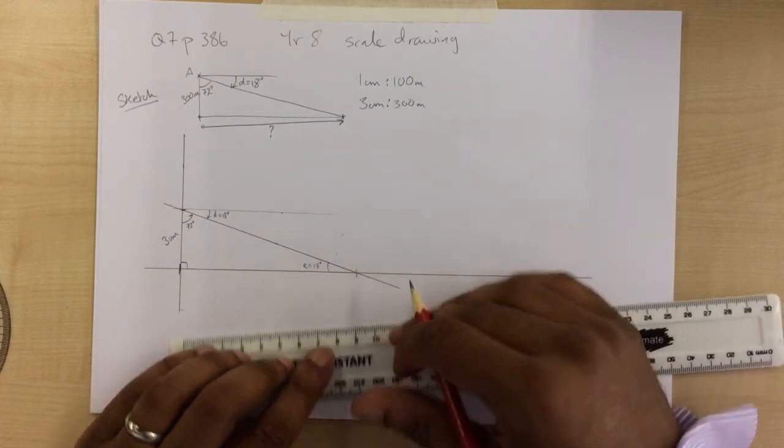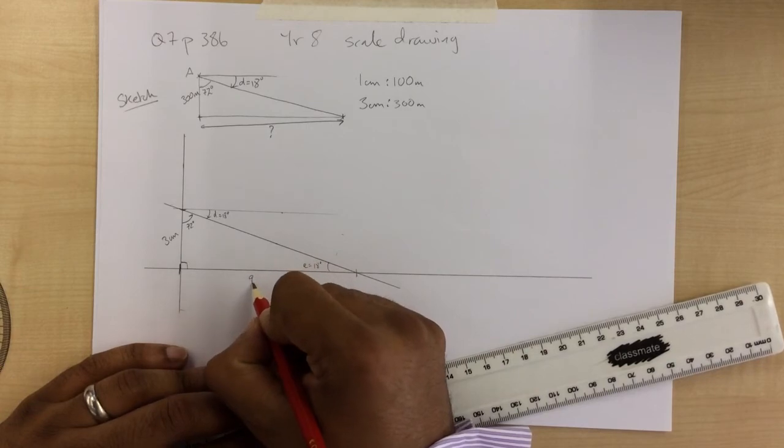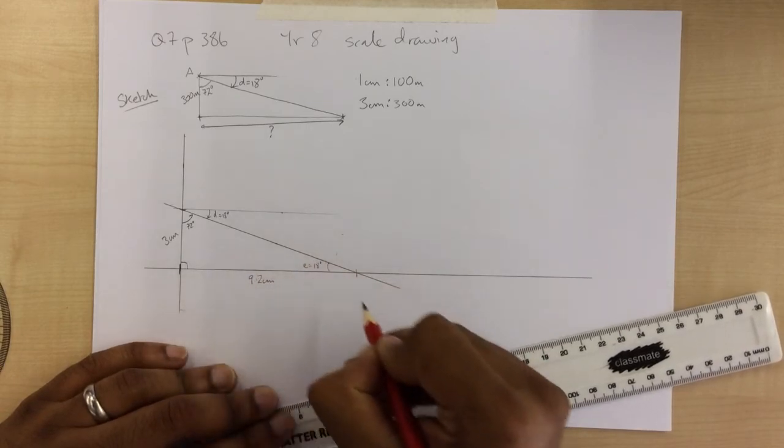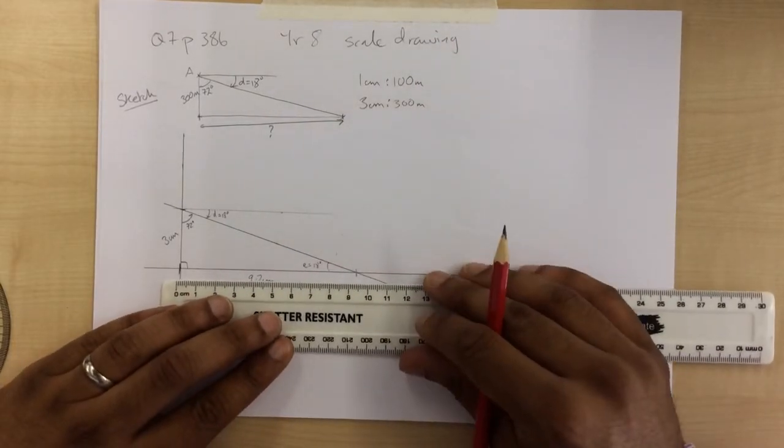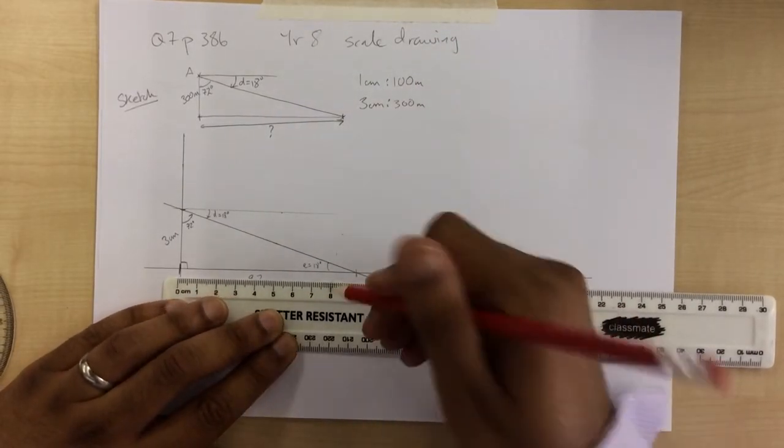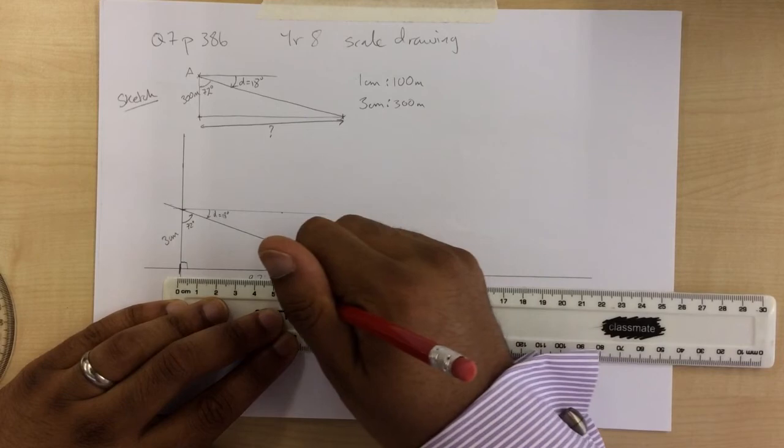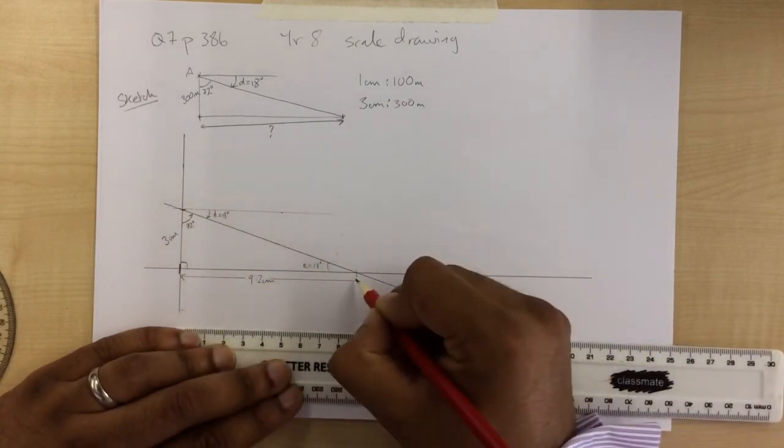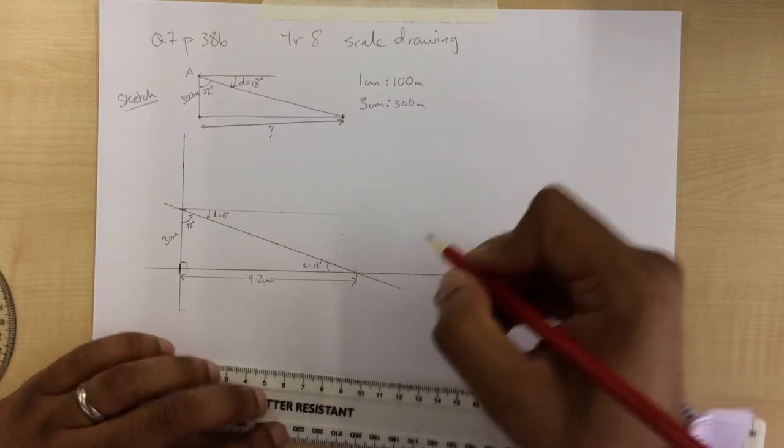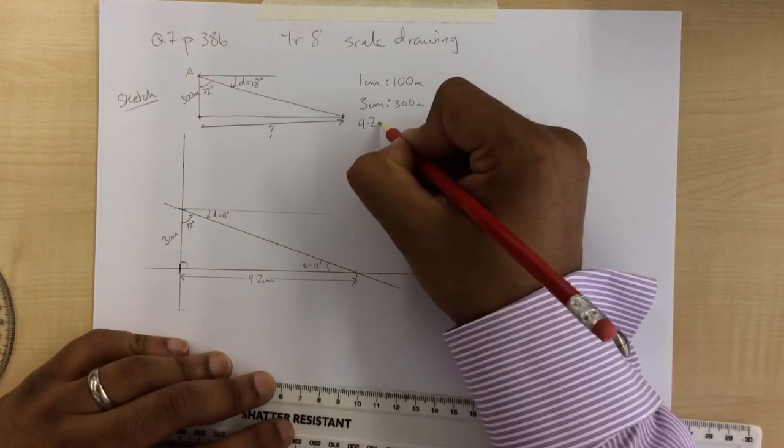9.2, 9.2 centimeters. OK. So that is from here to there. Let's join that in. Let me draw in a little line there. Let's say that's from there all the way to there, from that line to that line there. OK. So 9.2 centimeters. Now,